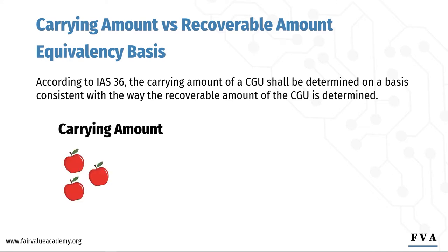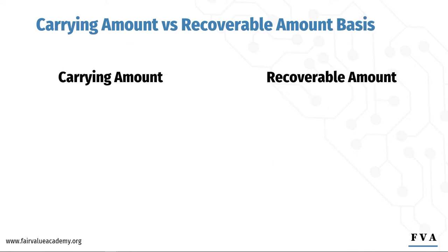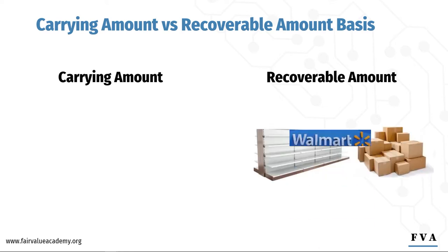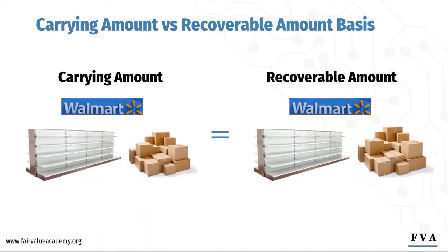If the carrying amount is made up of apples, but the recoverable amount is made up of apples, pears, and bananas, then this is not a fair assessment. Put another way, the assets that combine to estimate future cash flows to determine recoverable amount — be it VIU or fair value less cost of disposal of a CGU — have to correspond with the assets used in determining the carrying amount of the same CGU.